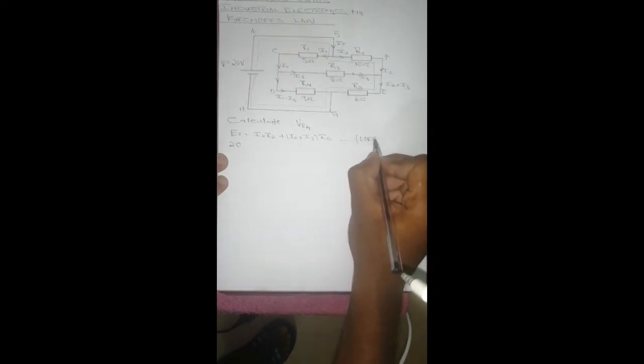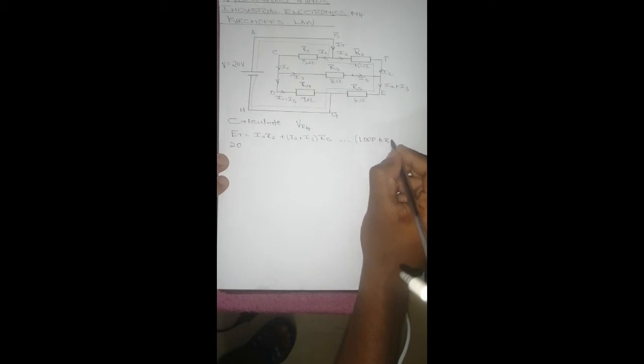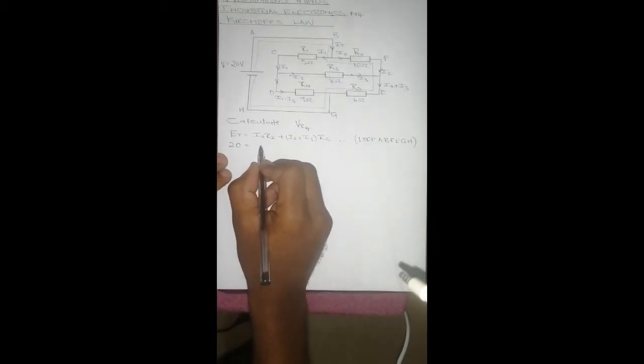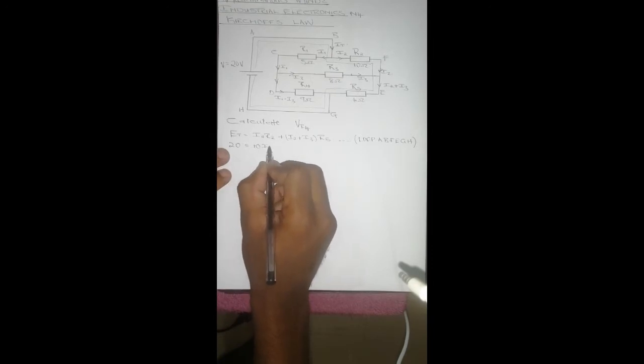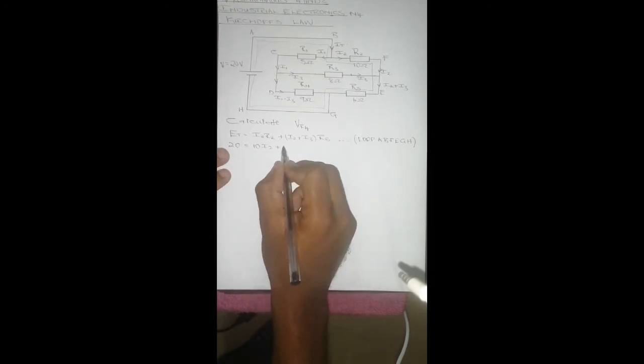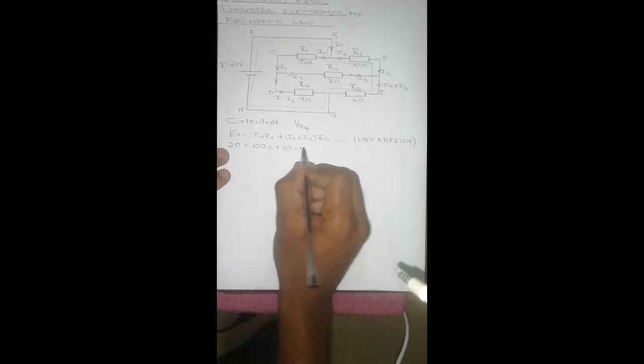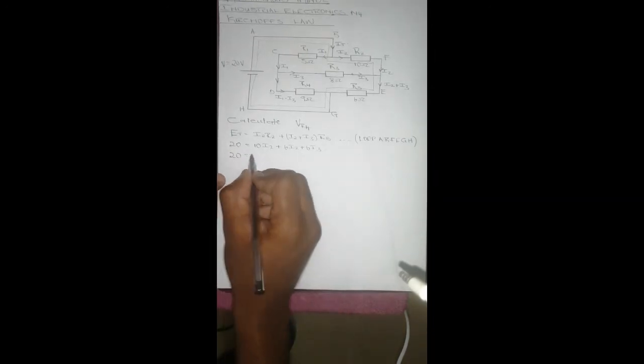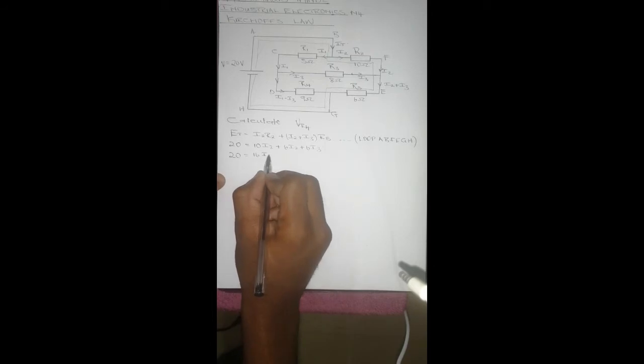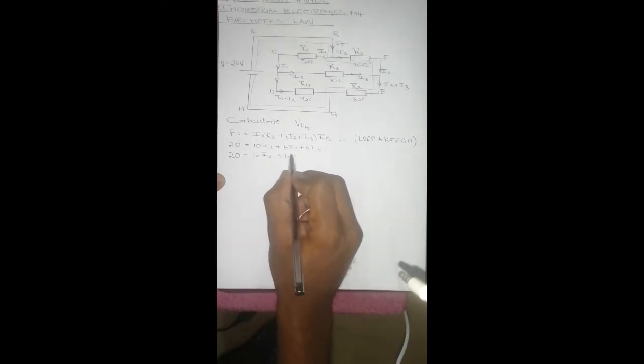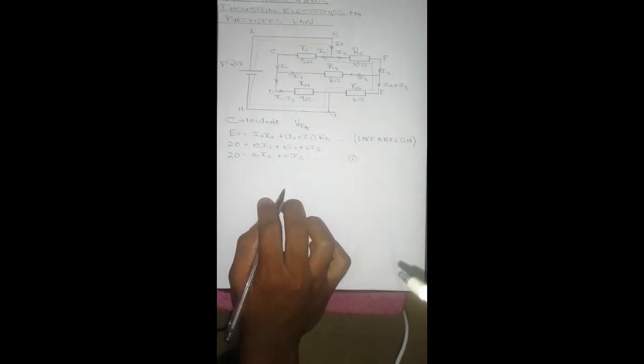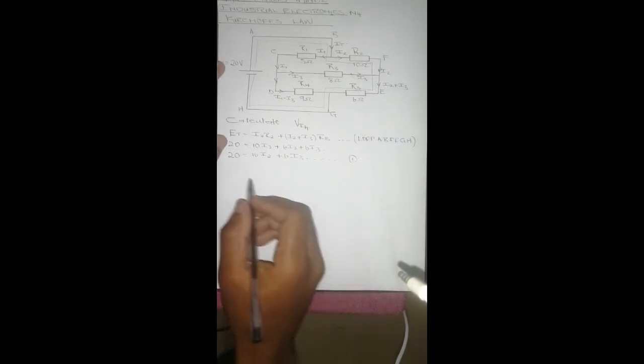Loop ABFEGH: 20 equals I2 R2. R2 is 10, so it's 10 I2 plus R5 is 6, so it's going to be 6 I2 plus 6 I3. Rearranging this is going to be 20 equals 16 I2 plus 6 I3. And let's call that equation one. This is for the first loop.